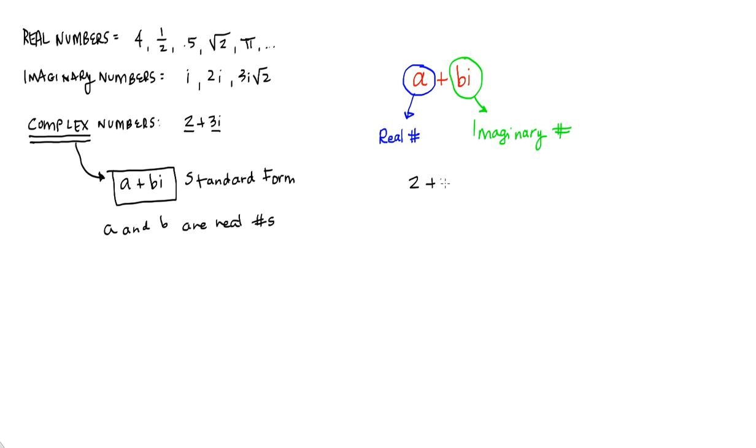The one I already gave you, 2 plus 3i, negative 4 minus 6i, where a is negative 4 and b is negative 6. And this one, a is 2, b is 3, right?